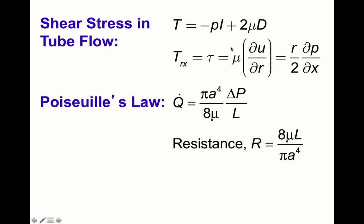We can also compute the shear stress using the Newtonian fluid equation. For this flow, where u is only a function of r, the shear stress tau_rx equals mu du/dr, which equals (r/2)(dp/dx). So the shear stress is proportional to the driving pressure gradient and increases linearly with radius.